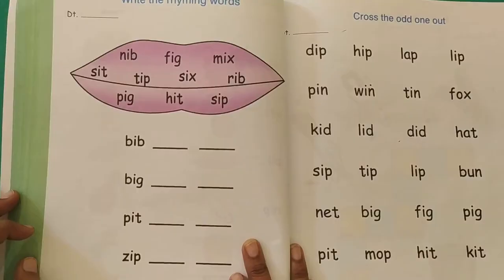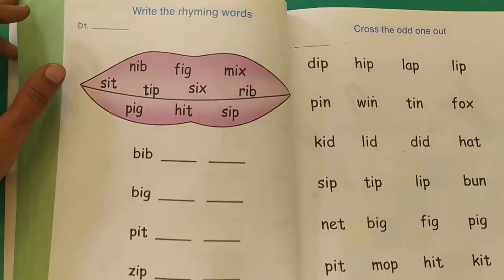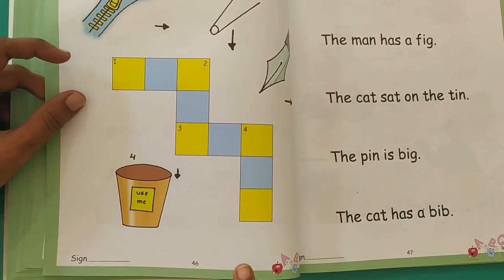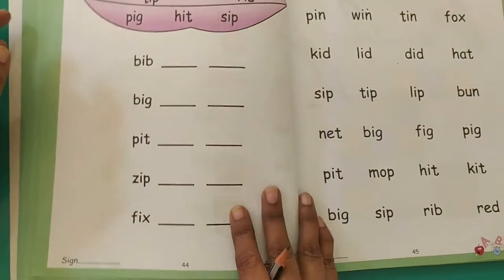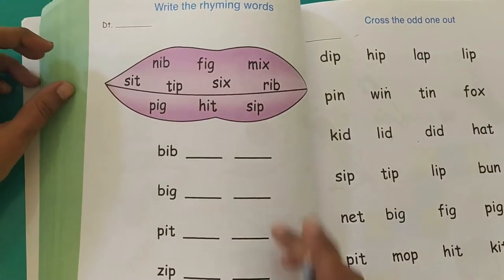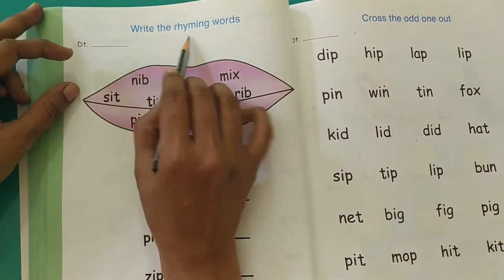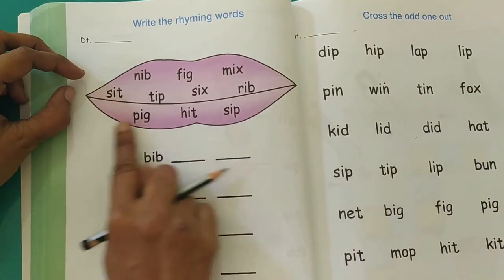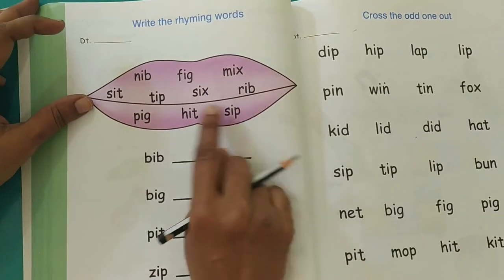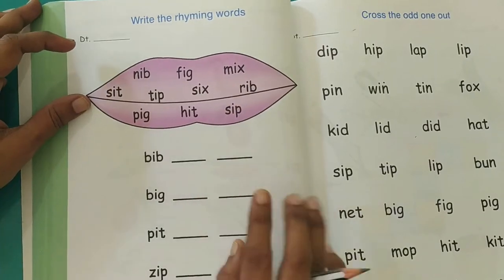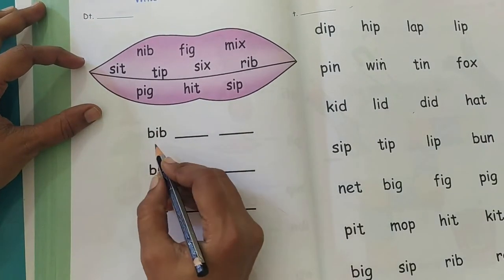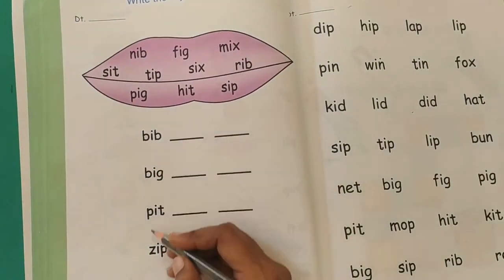Good morning children. Now we will start with our English worksheets. So children, the activity we are doing today is on page number 44, 45, and 46 of your English book. The first activity is write the rhyming words. Here in this box you have some words written. You have to choose words from this section and write it over here.